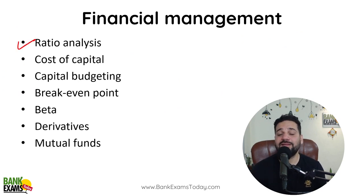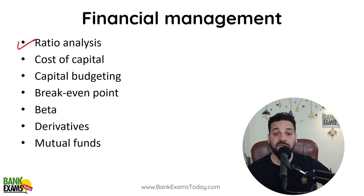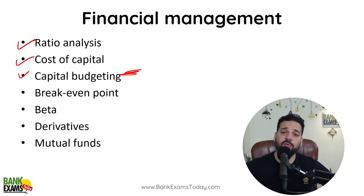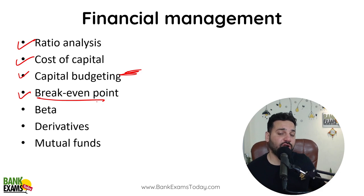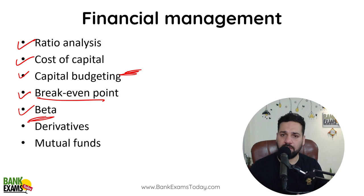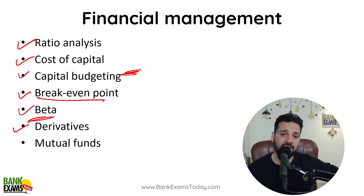Financial management — last year quite a few questions came from ratio analysis, and you can also expect some numericals. You won't need a calculator for most such questions — basic mathematics is sufficient. Topics include cost of capital and capital budgeting. Capital budgeting theory comes up a lot in papers. Break-even point numericals also appear. Beta-related questions come up — calculation of beta is a very easy numerical that repeats frequently, showing how risk factor and beta are calculated. Derivatives theory comes up quite a bit, and mutual funds give one question occasionally.